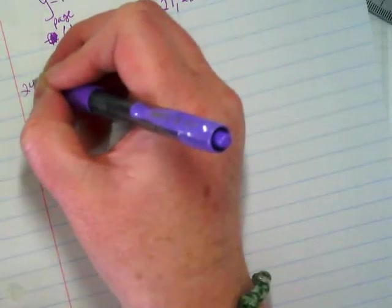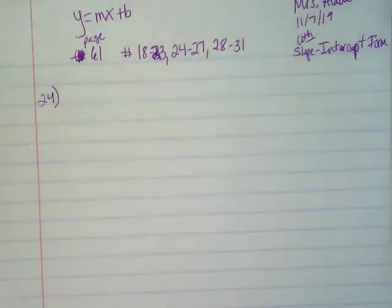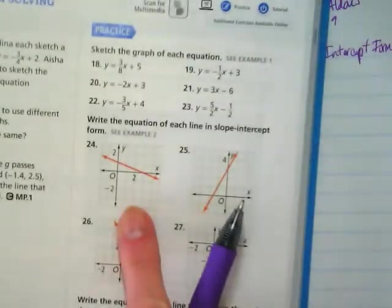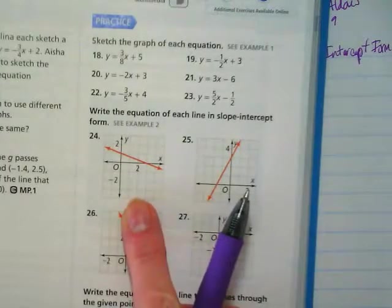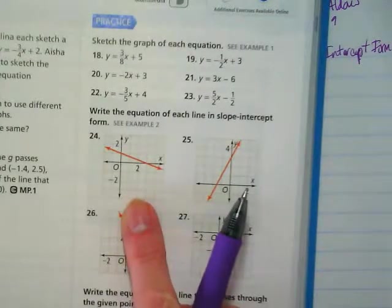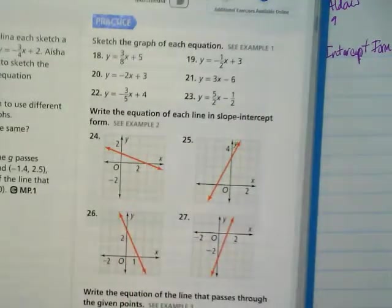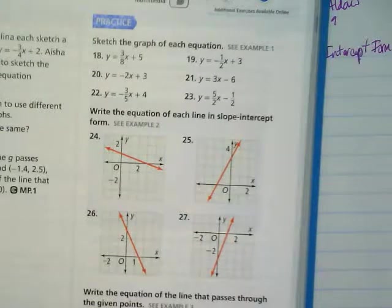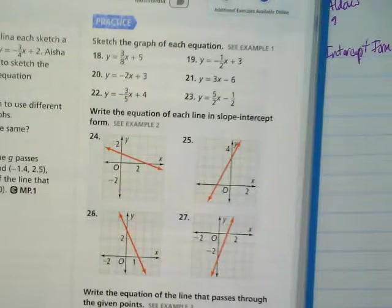Okay. Let's go try on the binder paper, number 24. This is the graph for number 24. I need two things from it in order to write the equation, which is what the directions are. I need the opposite of what we just did. We had an equation, and we made a graph. Now we're going to take the graph, and we're going to make the equation. But we need the same things. We need the y-intercept, and we need the slope.